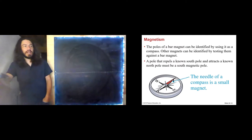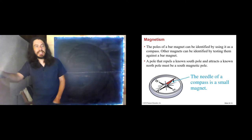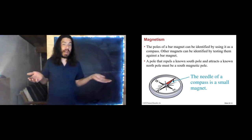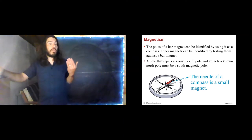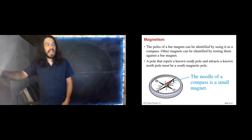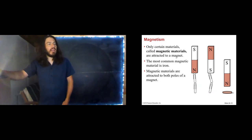The poles of a bar magnet can be identified by using a compass. Then other magnets can be identified by testing them against a bar magnet. It's much like charges, right? In order to tell whether this charge I have is positive or negative, I need to bring it near a positive and a negative, and it will attract one and repel the other. So, in order to know whether I have a positive or a negative charge, I need to have another charge that I know about nearby. Similarly, with magnets, you need to have a north and a south pole to test them with. A pole that repels a known south pole and attracts a known north pole must be a south pole. And only certain materials are magnetic. Most common material is iron. So, most of the stuff that is magnetic around us is magnetic because it's got a high iron content.